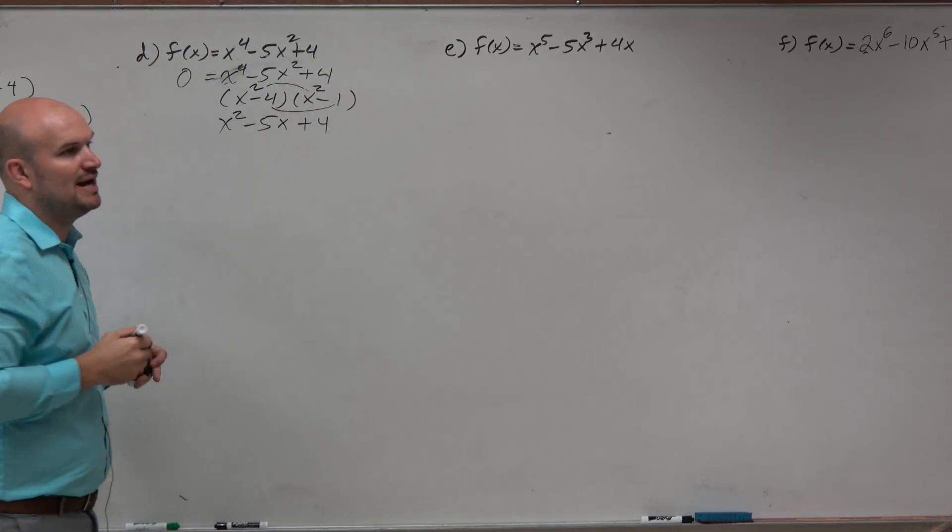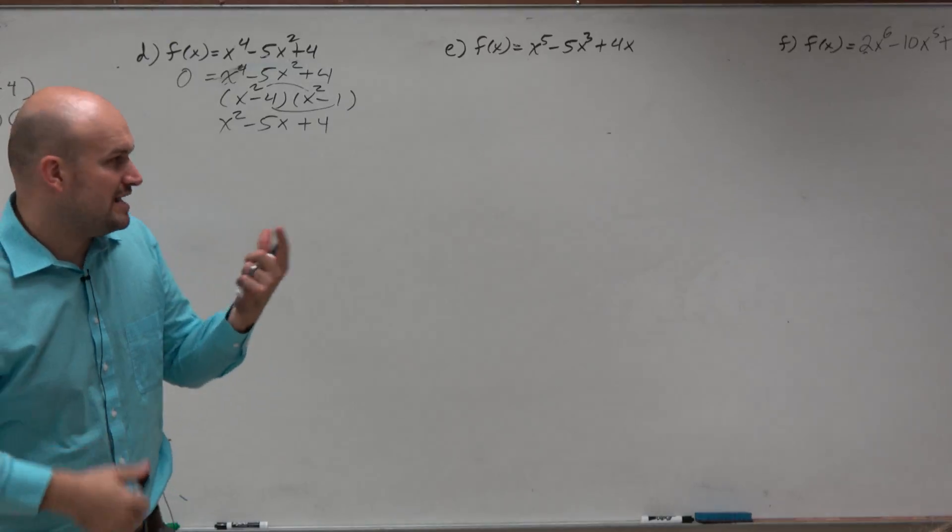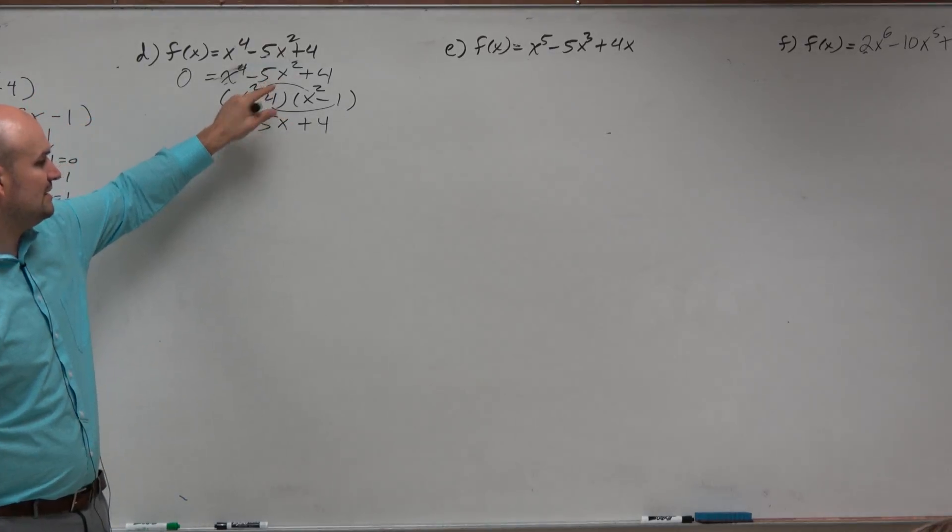Now, when I multiply x squared times x squared, I get x to the fourth. When I do my middle terms, they're going to combine to a negative 5x squared.